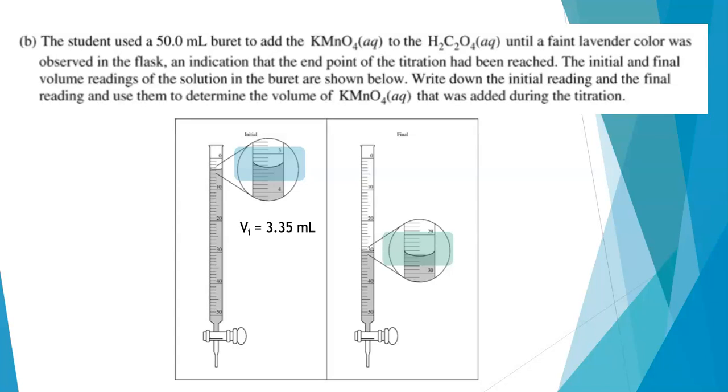For my final buret reading, again, I'm looking at the bottom of the meniscus. I'm reading down the buret. So my answer is bigger than 29, but smaller than 30. And looking at the bottom of the meniscus there, it's halfway between 0.5 and 0.6. So I'm going to report that as 29.55 milliliters. What I need is the difference between them. So I need to subtract the initial reading from the final reading. And that's my volume 26.20 milliliters.